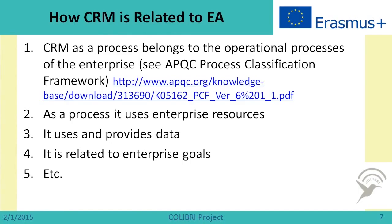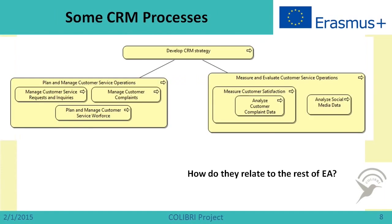As a process, CRM uses enterprise resources, uses and provides data, and is related to enterprise goals. You can see a representation of a fragment of enterprise architecture involving the process 'Develop CRM Strategy,' the process 'Plan and Manage Customer Service Operations,' 'Measure and Evaluate Customer Service Operations,' and sub-processes such as 'Manage Customer Service Requests and Inquiries,' 'Manage Customer Complaints,' 'Plan and Manage Customer Service Workforce,' 'Measure Customer Satisfaction,' 'Analyze Customer Complaint Data,' and 'Analyze Social Media Data.'